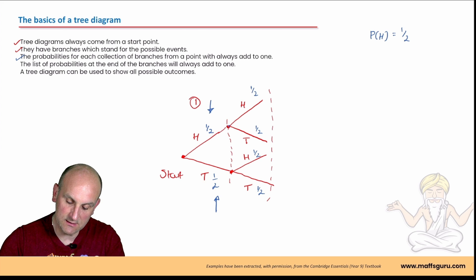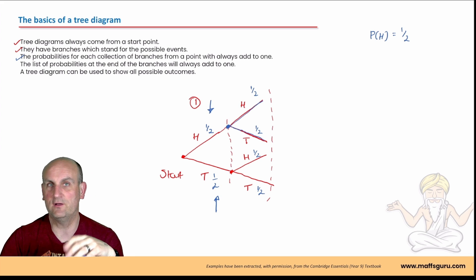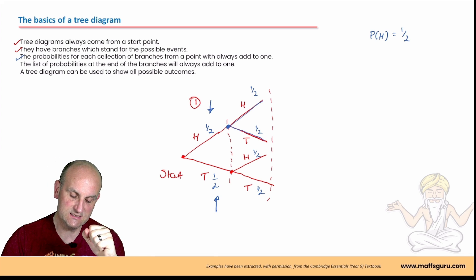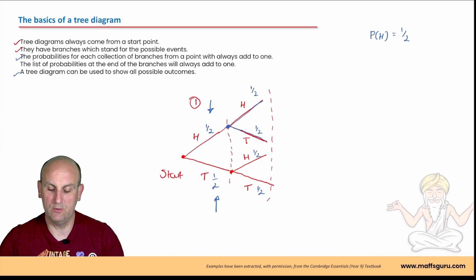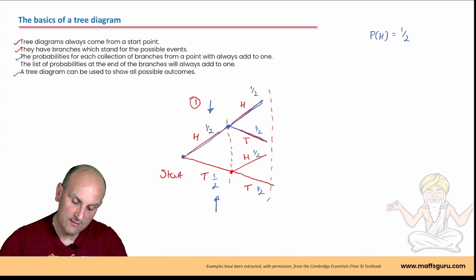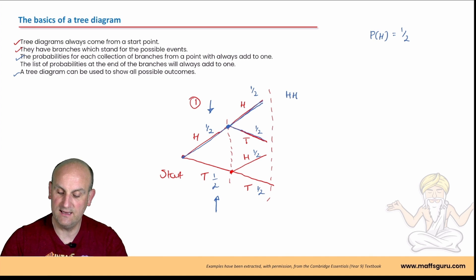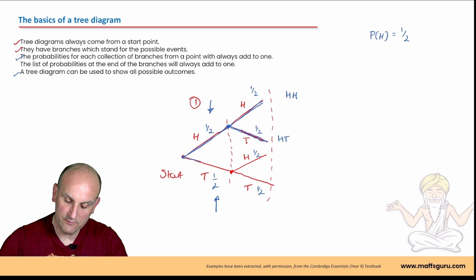This is useful in an exam: if I give you a blank diagram with some numbers filled in, you can find the missing ones because the branches from each point must add to one. The tree diagram shows all possible outcomes: going along the top branch gives head followed by head; going head then diverging down gives head followed by tail; then tail followed by head; and finally tail followed by tail.